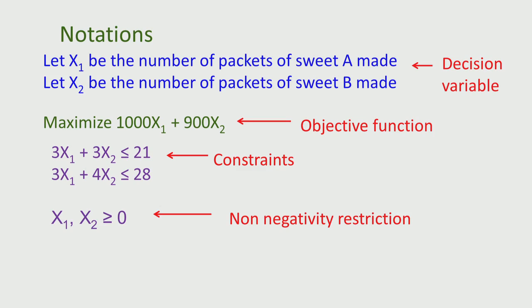The first part of a linear programming formulation is to define the decision variables. Then we define the objective function as a function of the decision variables — in this case a linear function. The objective function is 1000 X1 plus 900 X2, which is a linear function of X1 and X2. The function is not non-linear; for example, it is not 1000 X1 squared plus 900 X2 squared. It is linear, meaning if we draw the curve associated with it, we would get a line.